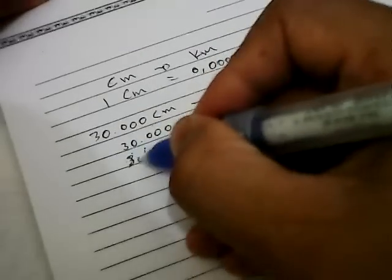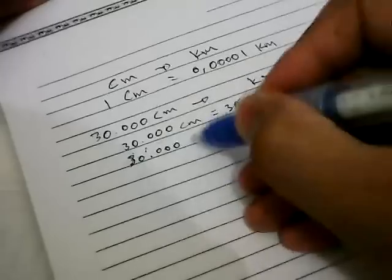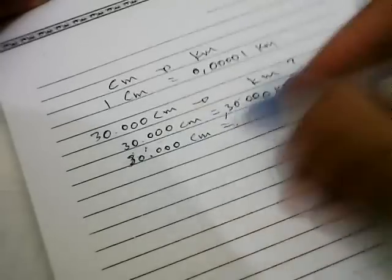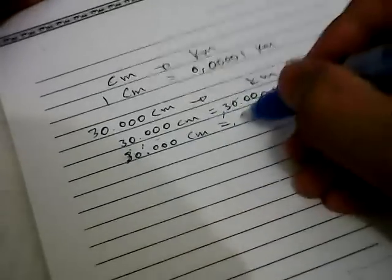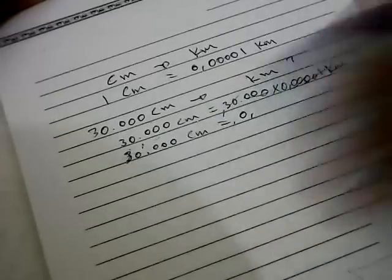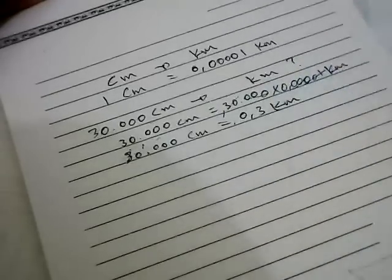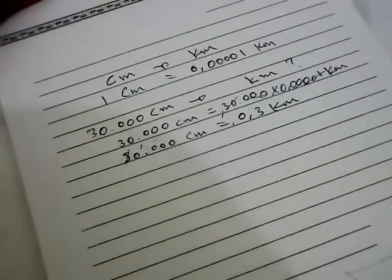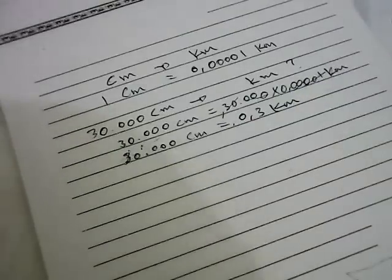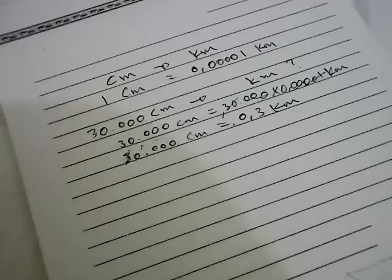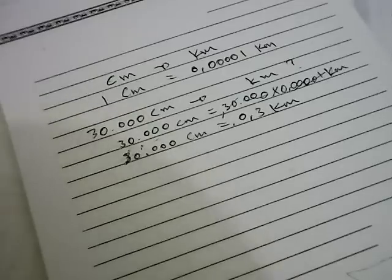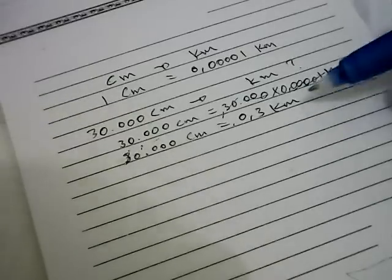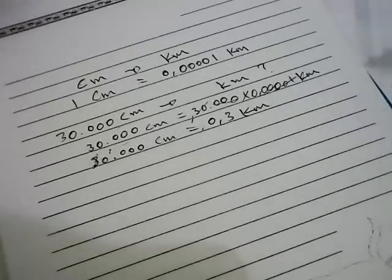We get 30,000 centimeters is equal to 0.3 kilometers. Well, that's it. That's the answer for the question: how much is 30,000 centimeters converted into kilometers? The answer is 0.3.